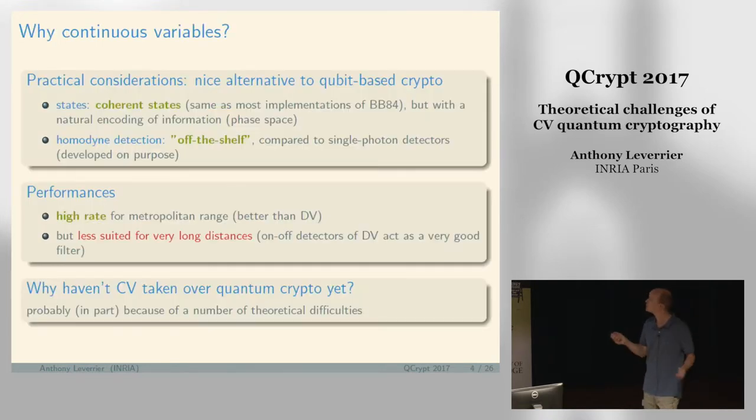Why should you care about continuous variables? The main reason is practical considerations. I think it's a nice alternative to qubit-based crypto. To do quantum key distribution, you need to be able to prepare some states and measure some states.